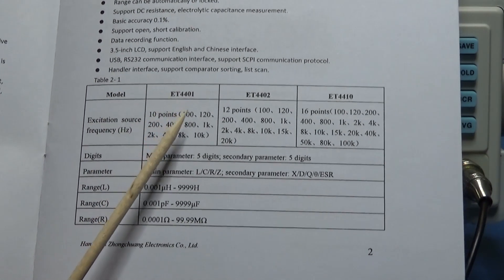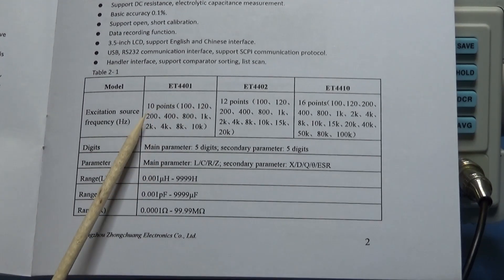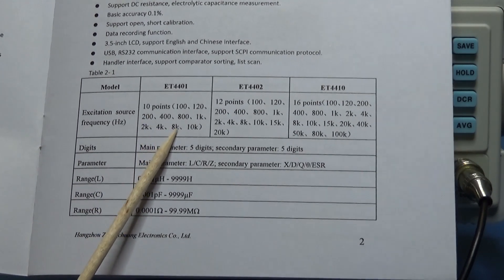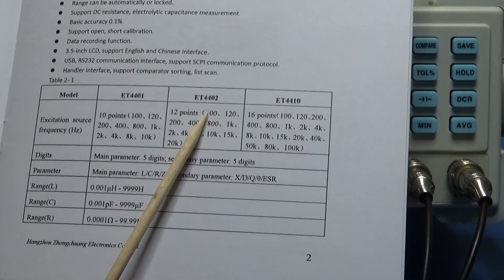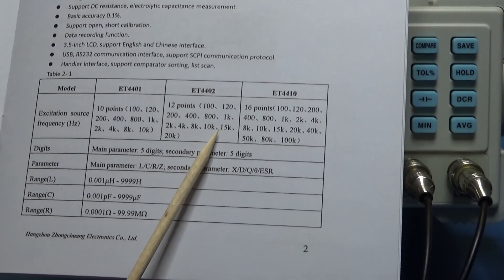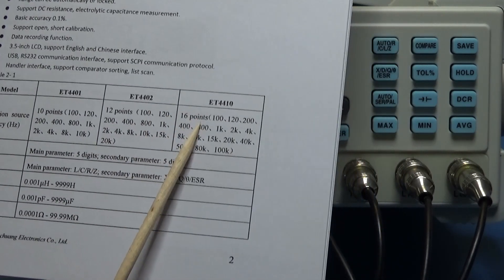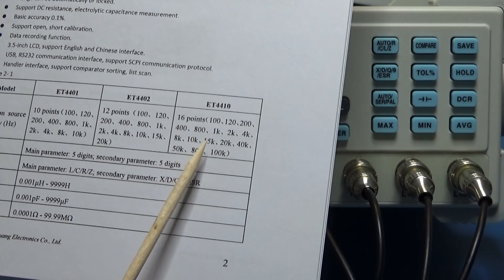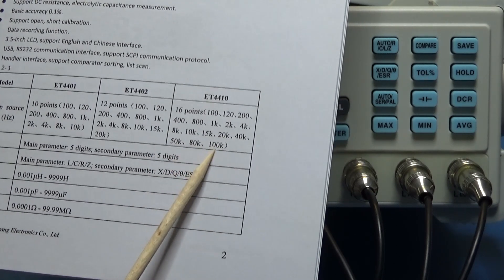In the specifications it sets points but points is the steps. So for 10 kilohertz it will go for 10 points: 100 hertz, 200, 400, 800, 1 kilohertz, 2 kilohertz, 4 kilohertz, 8 kilohertz, and 10 kilohertz. For the 20 kilohertz it says 12 points. So after 10 kilohertz we go to 15, 20. And 16 points for the 100 kilohertz. That means after 15 we go to 20 kilohertz, 40, 50, 80 and 100.